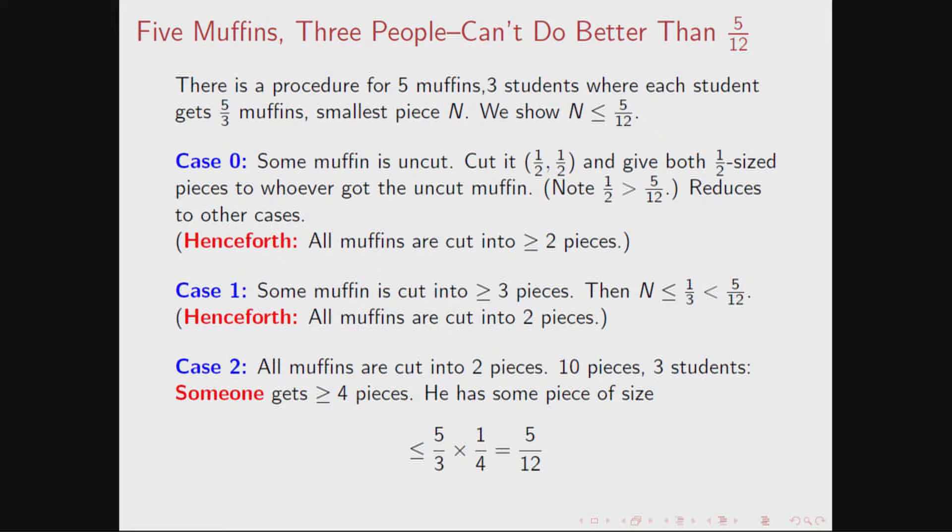If a student gets four pieces and has five-thirds, then that student must have some muffin of size less than or equal to five-thirds times one-quarter, or five-twelfths. So you can't do better than five-twelfths. Great. Good to know. And what of that?